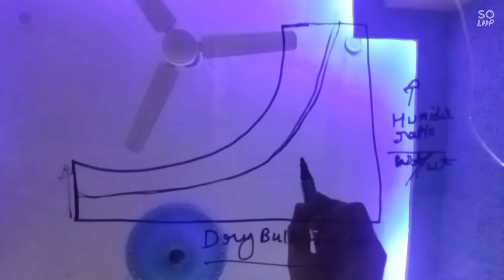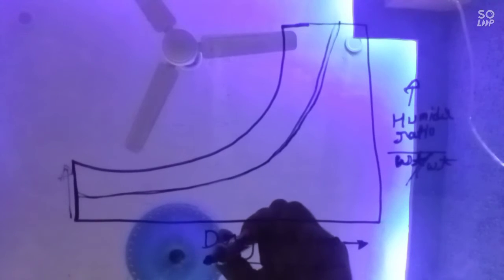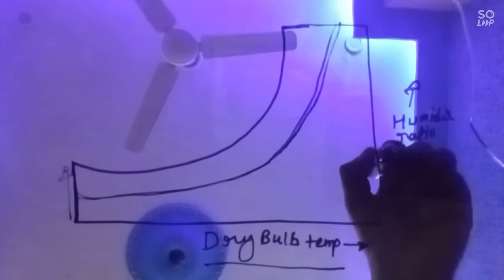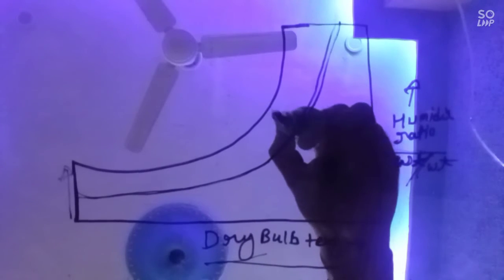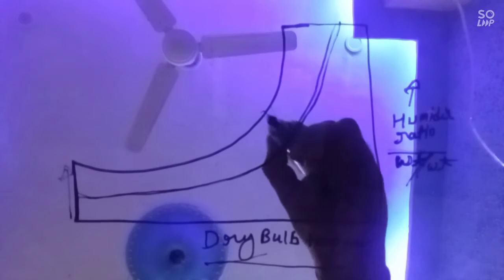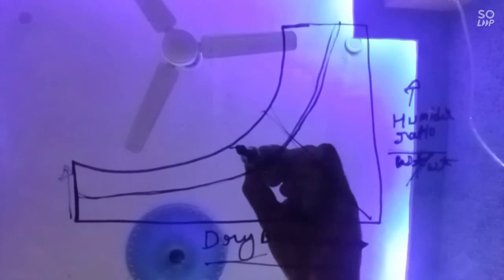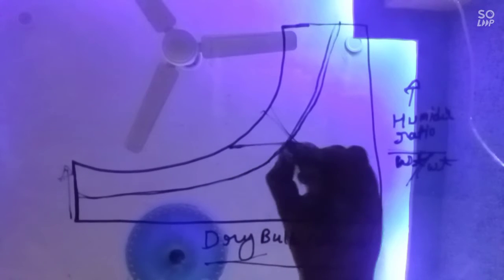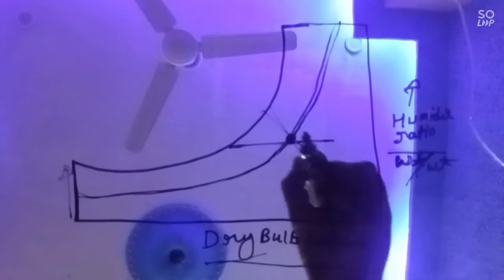Psychrometric chart, which is used in the air conditioning field in HVAC field. This is a dry bulb temperature, this is a wet bulb temperature in a vertical direction, dry bulb temperature in a horizontal direction. This is a wet bulb line, wet bulb temperature line. And this is dew point temperature. When the line is cut at here, where they meet, this is called dew point temperature.